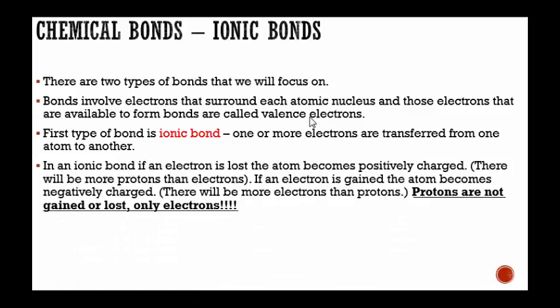In an ionic bond, if an electron is lost, the atom becomes positively charged because there will be more protons than electrons. If an electron is gained, the atom becomes negatively charged because there will be more electrons than protons. It's important to understand that protons are not gained or lost. Only electrons are gained or lost. If something is negatively charged, it doesn't mean it lost a proton, it means it gained an electron. If something is positively charged, it doesn't mean it gained a proton, it means it lost an electron.